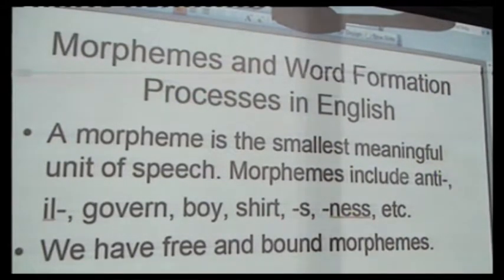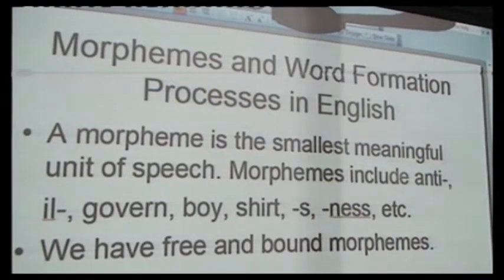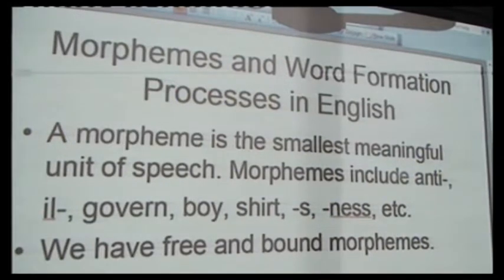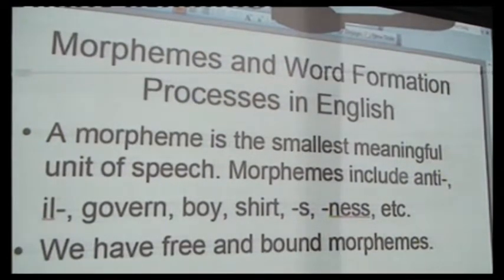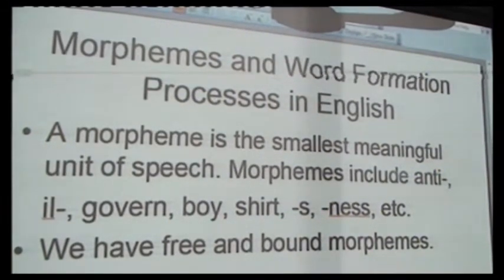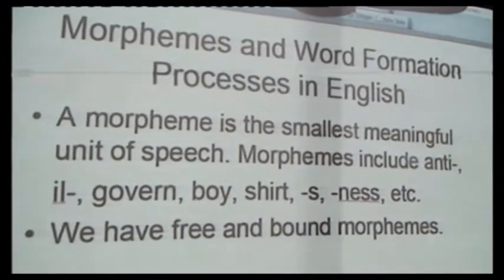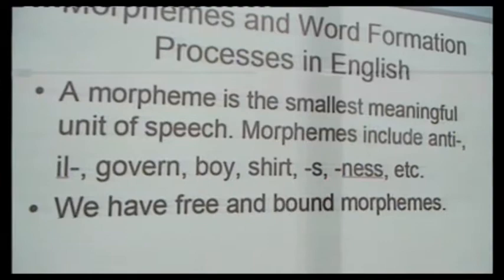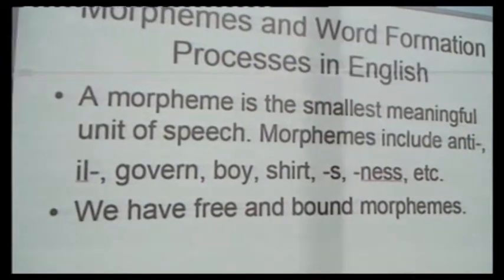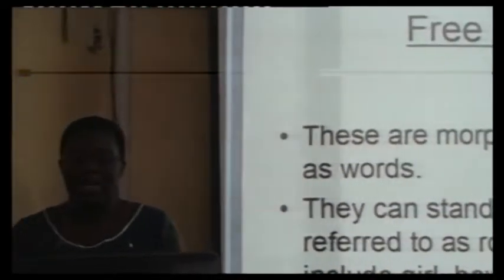We have two types of morphemes. We have free morphemes and we have bound morphemes. Examples of morphemes include 'govern,' 'boy,' 'shirt,' and then we could also have morphemes such as 'anti,' 'illness,' and so on. So we have free morphemes and we have bound morphemes.